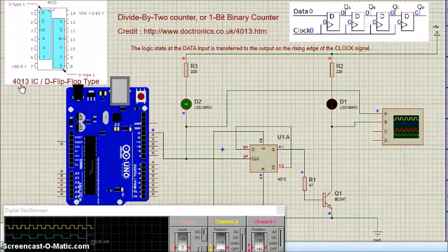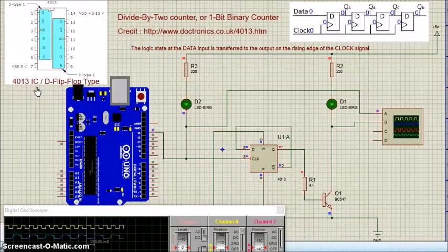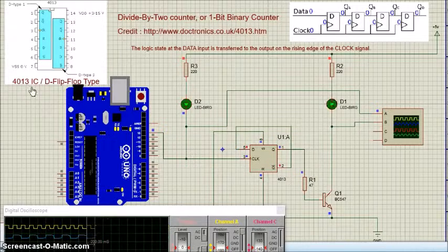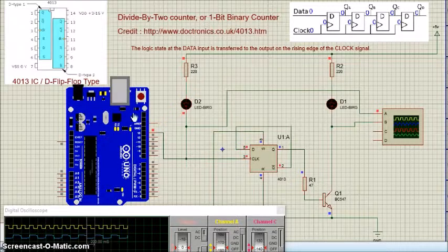D flip-flop is widely used. It is also known as Data or Delay Flip Flop. This program uses the 4013 D type flip-flop to produce a 1-bit counter.